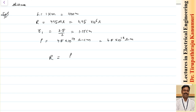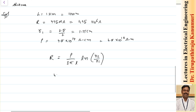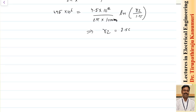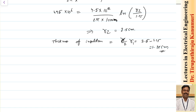Using R = ρ/(2πL) · ln(R2/R1), substituting 495 × 10⁶ = (4.5 × 10¹²) / (2π × 1000) × ln(R2/1.25), solving gives R2 = 2.5 centimeters. The thickness of insulation is R2 minus R1, which equals 2.5 minus 1.25, giving an insulation thickness of 1.25 centimeters.